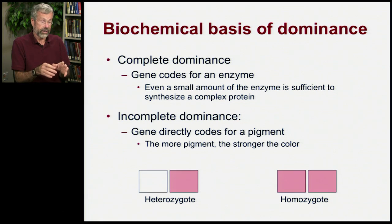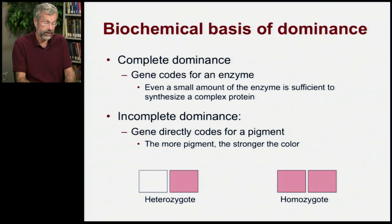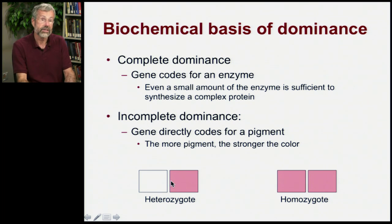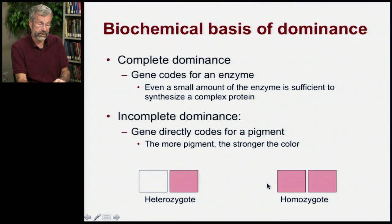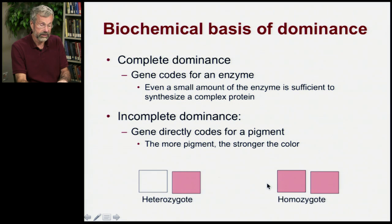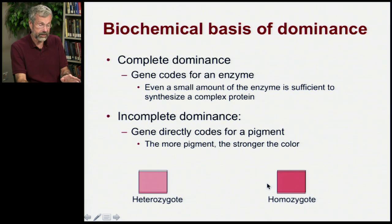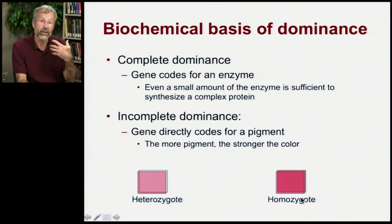So if we have a heterozygote versus a homozygote with incomplete dominance, if you're only getting a single dose then you're going to be pink. But if you get a double dose, you'll be red. So if we put these two together, twice as much pigment makes for a darker red in the case of the snapdragons.